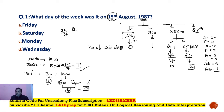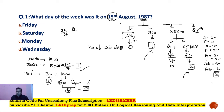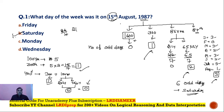Now summing all odd days: 1600 years = 0, 300 years = 1, 86 years = 2, and 87th year up to 15th August = 3. Total: 0 + 1 + 2 + 3 = 6 odd days. 6 odd days means the day is Saturday. So the answer to the question is Saturday, which is option B.